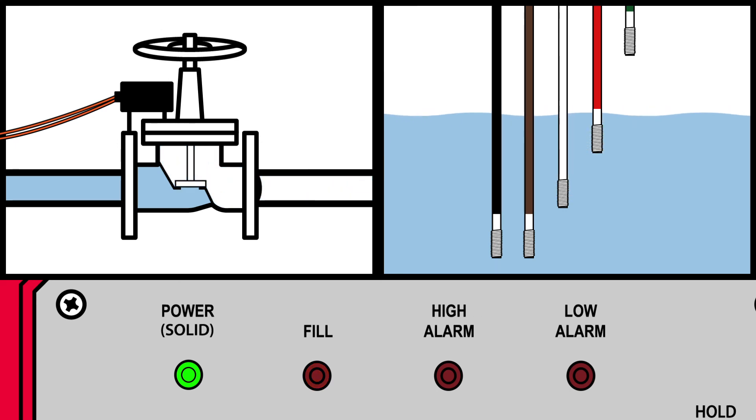If the water drops below the brown rod, the low-alarm LED turns on with the fill LED. If the water rises too high and touches the green rod, the high alarm activates.